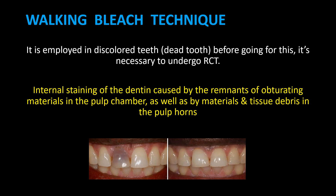Walking bleach technique: It is employed in discolored or non-vital teeth. Before undergoing this procedure, it is necessary to have completed root canal treatment (RCT). Internal staining of the dentin is caused by remnants of obturating materials in the pulp chamber, as well as by materials and tissue debris in the pulp horns.